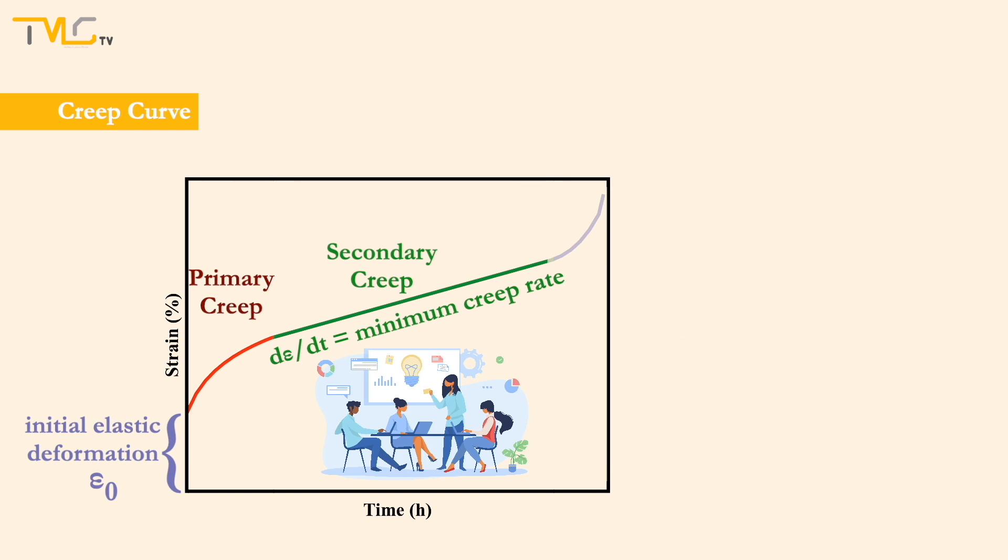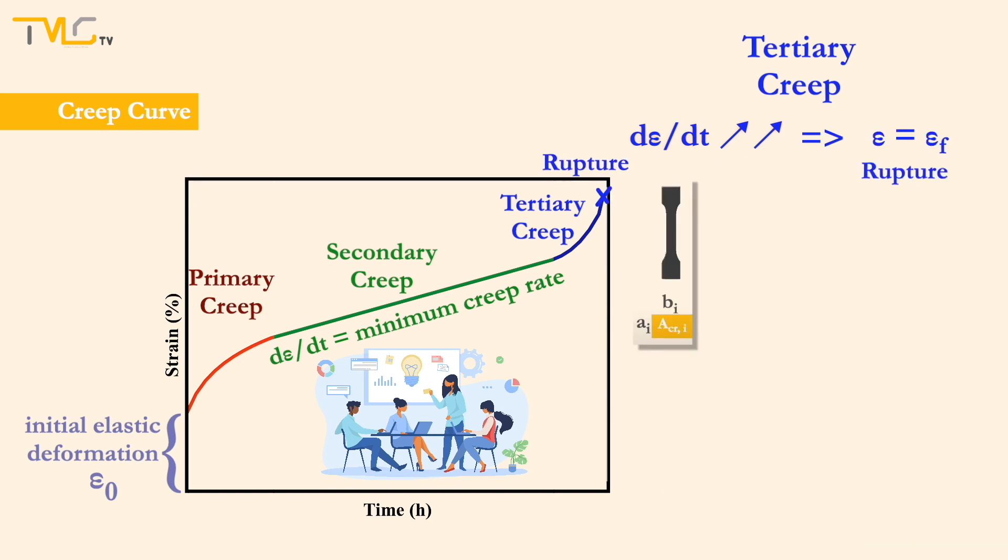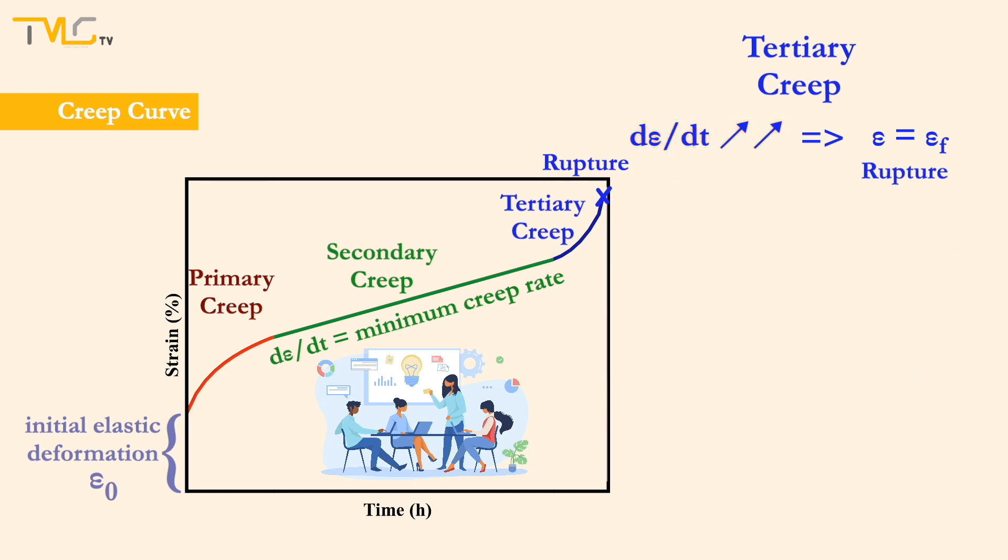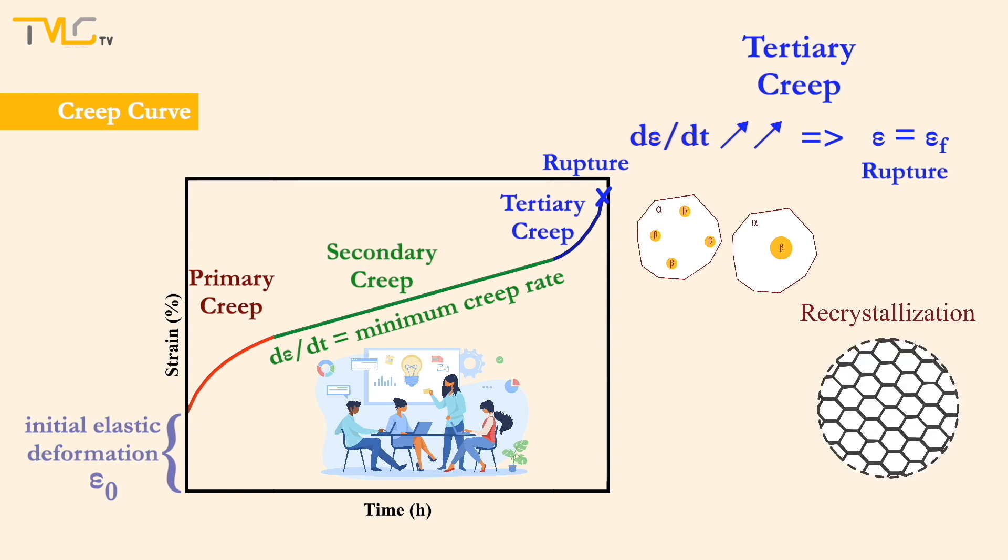As the material is deformed further, it enters the last stage of creep, called the tertiary creep. At this stage, the creep rate accelerates rapidly and eventually material fails. This failure is often termed rupture. Tertiary creep starts as the cross-sectional area begins to reduce due to necking or internal void formation, and increases the strain rate with increasing rate. During this stage, microstructural changes such as coarsening of precipitates, recrystallization or diffusional changes may occur in the phases present.